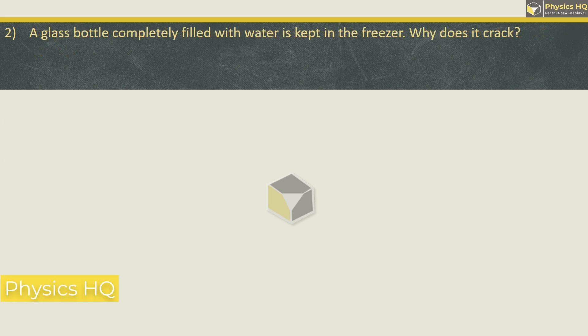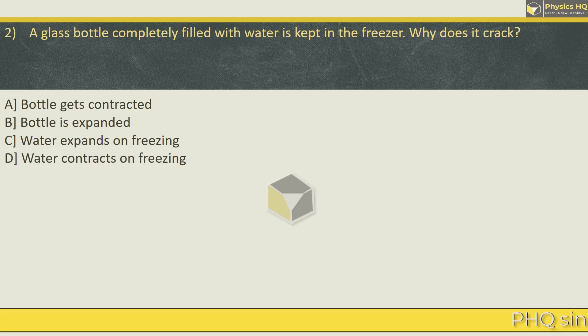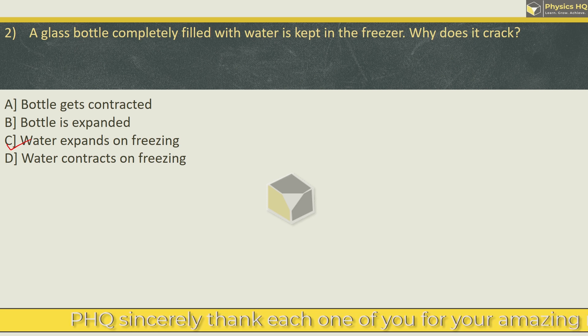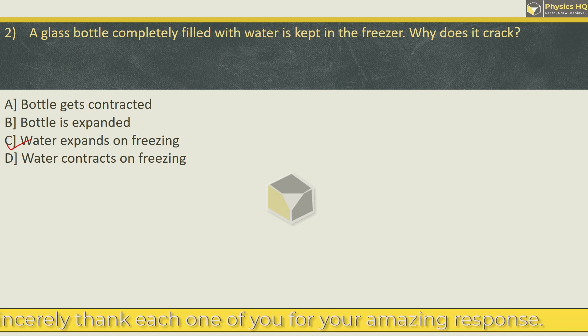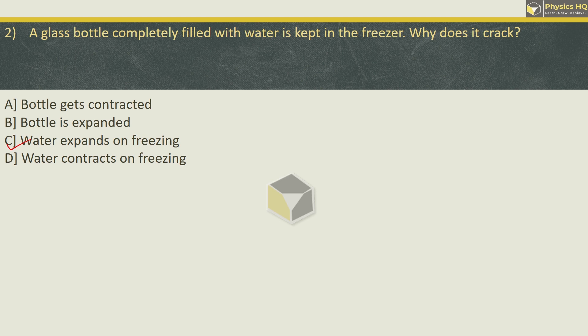A glass bottle completely filled with water is kept in the freezer. Why does it crack? The options are: bottle gets contracted, bottle is expanded, water expands on freezing, or water contracts on freezing. The correct option is Option C, because water expands on freezing. Between the temperature 0 to 4 degree Celsius, water shows different behavior. Generally, when we decrease the temperature, volume is reduced. But when the temperature goes from 4 to 0 degree Celsius, water actually expands. So if the bottle is completely filled, it expands and it cracks.